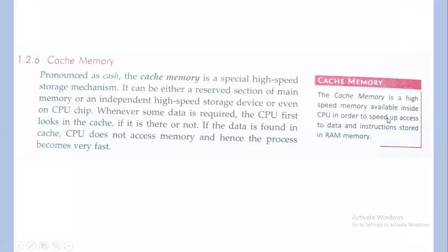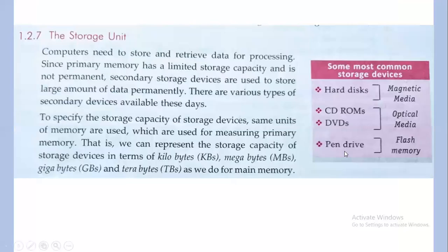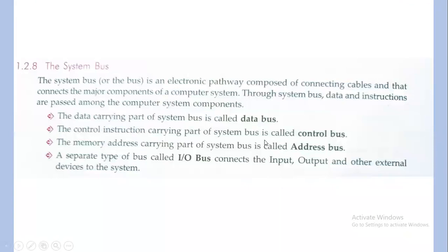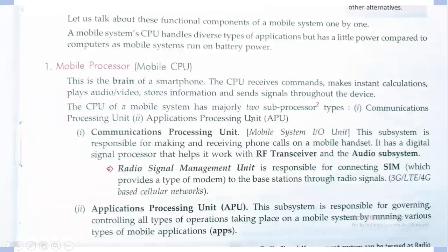Cache memory is a high-speed memory available inside the CPU to speed up access to data and instructions stored in RAM. The storage unit is where you store information for later use — it includes hard disk, CD-ROMs, DVD, and pen drive. The system bus consists of channels that carry information from one component to another within the system. Mobile processors act as the brain of the smartphone, controlling all operations, communications, and applications within the mobile.